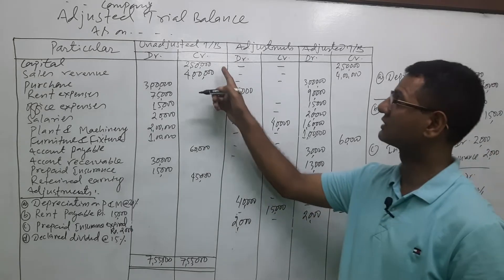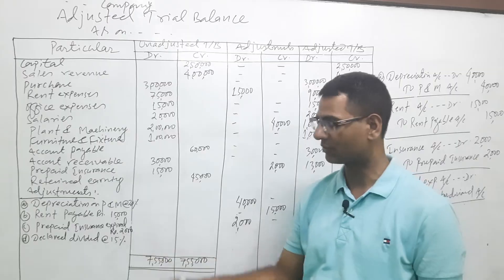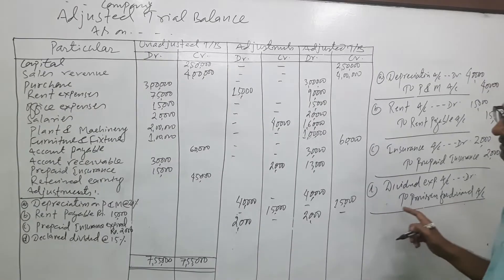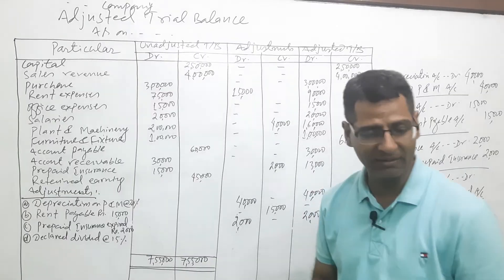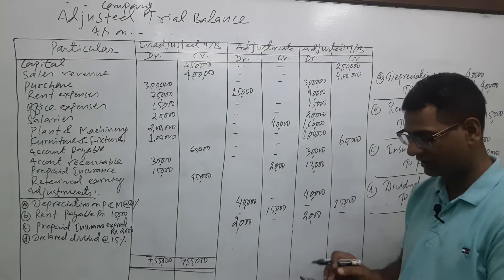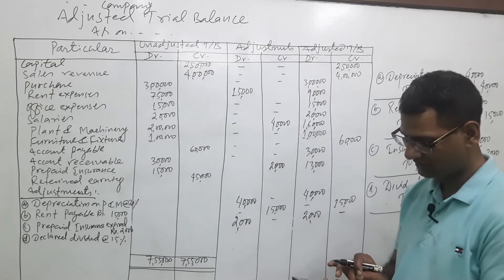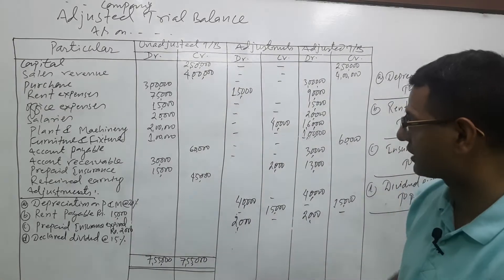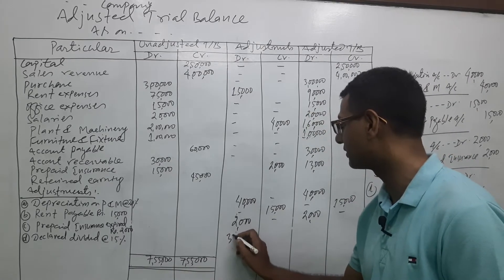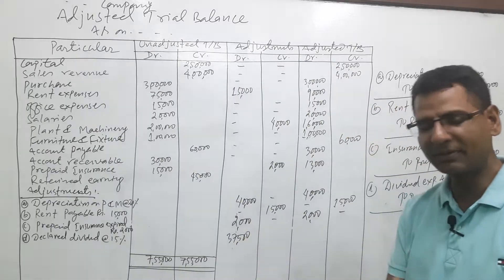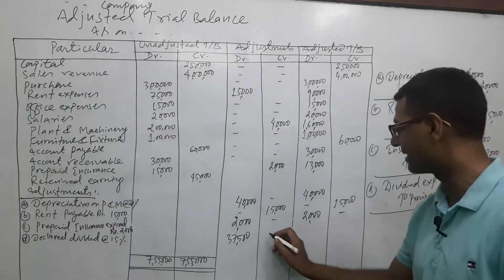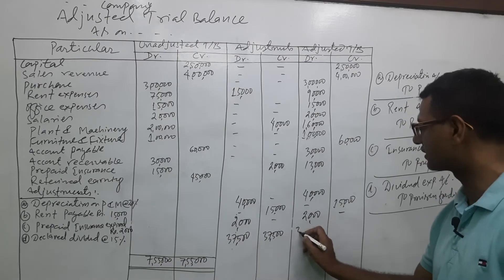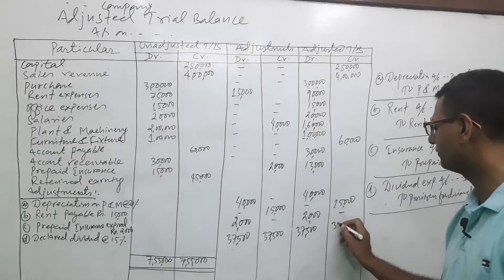Finally, declare dividend at the rate of 15% — this is always charged on paid-up capital. Capital is 2,50,000; 15% of 2,50,000 = 37,500. Dividend expenses account debit to provision for dividend — because expenses are debited and liabilities are credited. So debit and credit are both 37,500.